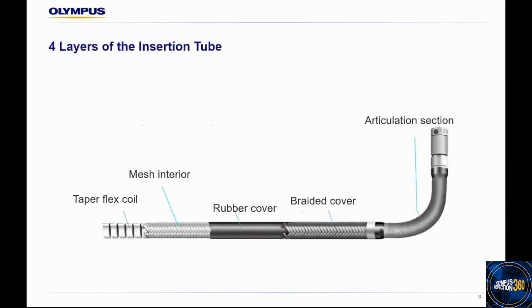These are the four layers of the insertion tube. The outermost layer is the braided cover made from tungsten, which is strong and durable, making the insertion tube abrasion resistant. The second layer, which is glued to the braided cover, is the rubber cover that prevents water ingress, making the insertion tube waterproof.